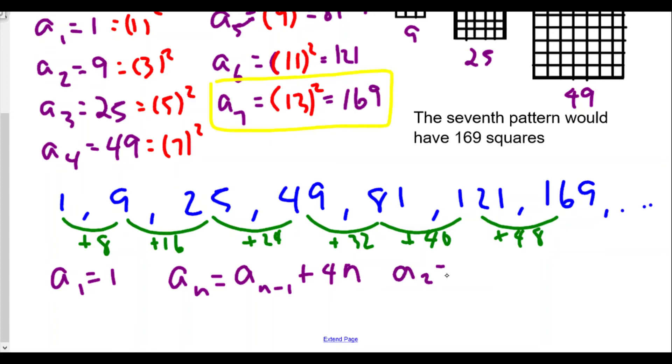All right so here we see a2 is equal to one plus four times two. Well that's definitely okay, that's nine. But is a3 equals nine plus four times three? And that's going to be 12 plus 9, 21. No that's no good. So that's no good for us, so let's strike that.